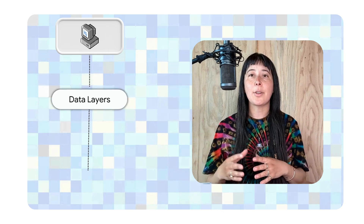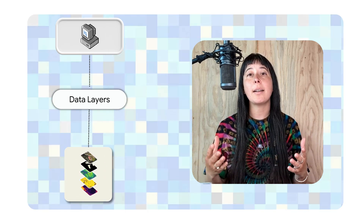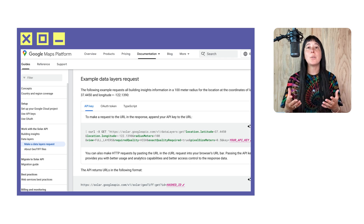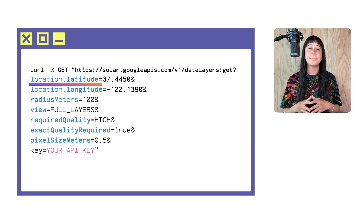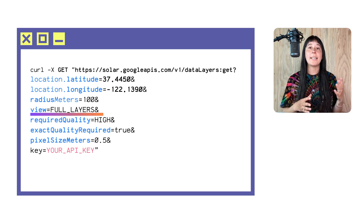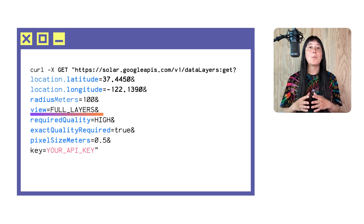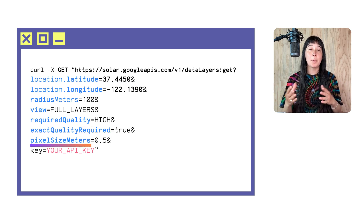Next, to make a request to the Data Layers Endpoint, which is the service for accessing multiple imagery datasets for creating custom solar models, you include the following URL parameters in your request: latitude and longitude coordinates of the location, the radius of the region surrounding the location, the imagery data you wish returned — such as DSM, RGB, mask, annual flux, or monthly flux, which we covered in a prior episode — the minimum desired imagery quality, and the minimum scale of data to return in meters per pixel.